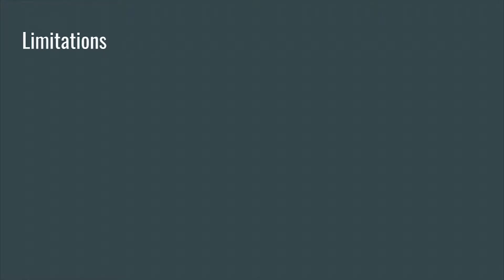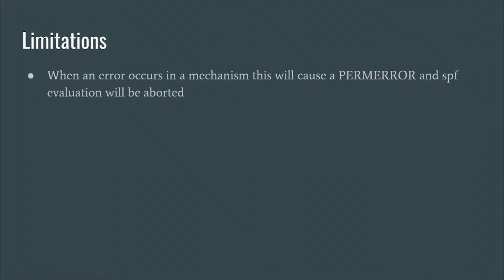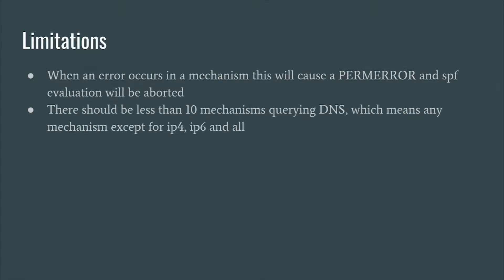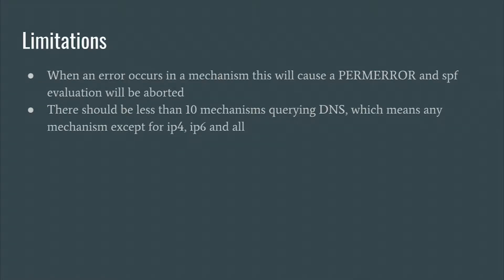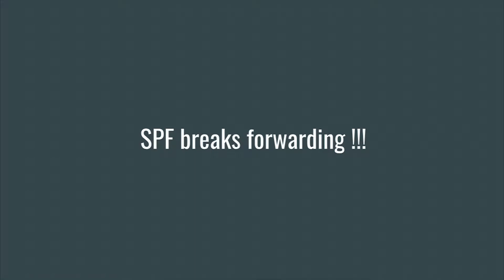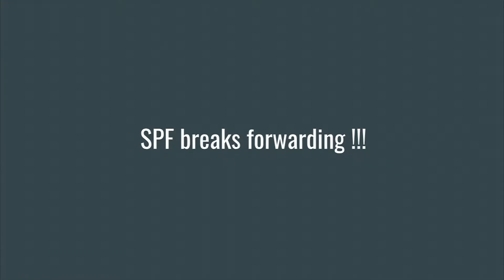There are a couple of limitations to SPF. One of them is that if you define a wrong mechanism in your record, the entire record will be invalid and it will always send a fail. Also, there should be fewer than 10 mechanisms requiring DNS lookups — so any A record, MX record, or include record will trigger a DNS lookup. If there are more than 10 needed to find your system, it will automatically fail as well. And one more caveat is that SPF breaks forwarding. If you have a message from Hotmail which has an SPF record, and you forward that from your mail server to a different email address, the receiving email server will see your mail server as the sending party for that Hotmail address, and it will receive a fail message.